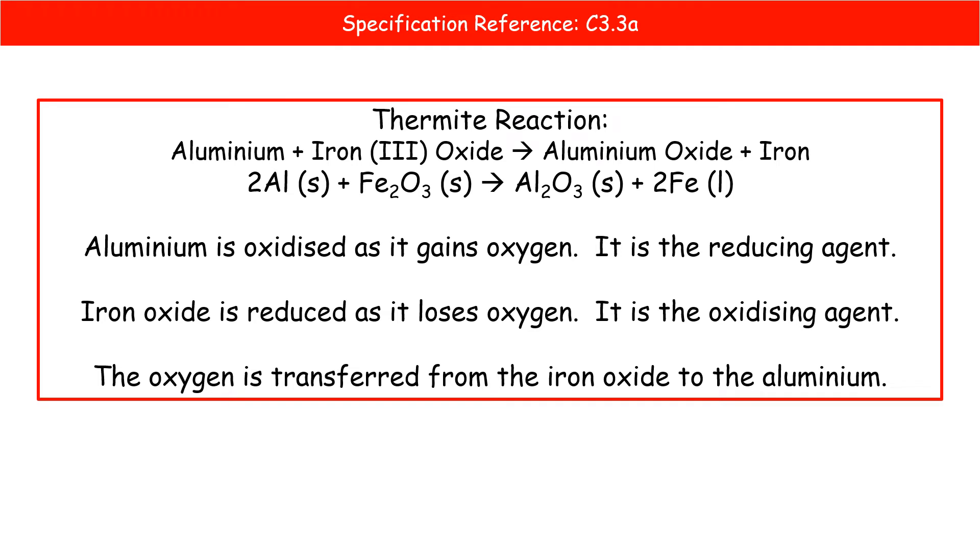To help you understand this next bit, I've given us an example of the thermite reaction. So in the thermite reaction, we start with aluminium and iron oxide and we're going to make aluminium oxide and iron. Now, I have given us the balanced symbol equation underneath as well because that might make it easier to see what's happening.